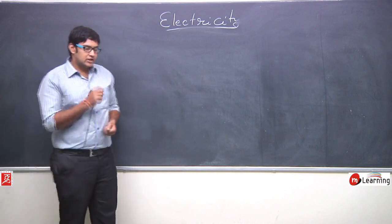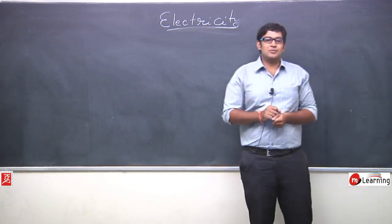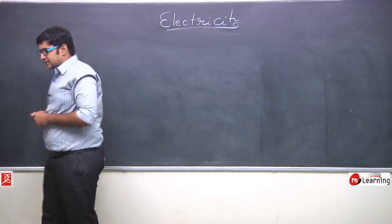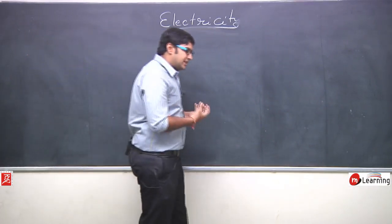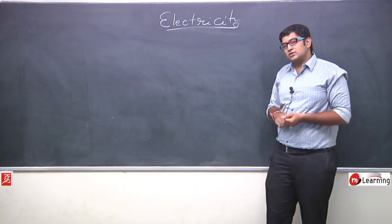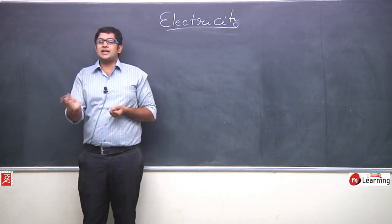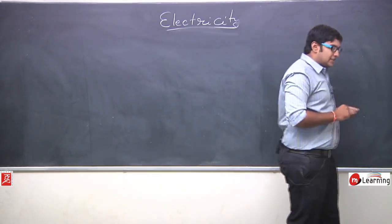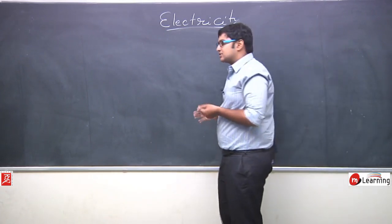Now we have studied the comparison between mass and charge. Both are fundamental properties of matter. We have said that charge is quantized but mass is not quantized — there is no value which is an integral multiple for mass. Charge is always created by the transfer of electrons. There is no sub-atomic particle smaller than an electron that can be transferred from one atom to another. So the charge transferred is totally dependent on the number of electrons.